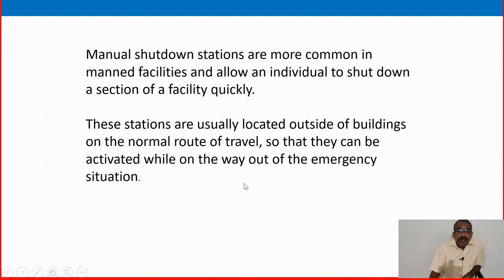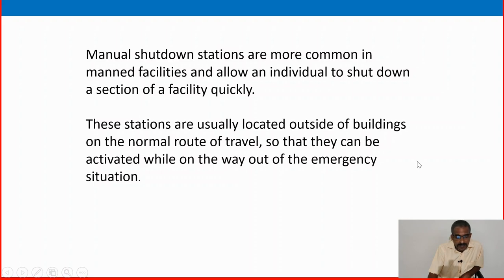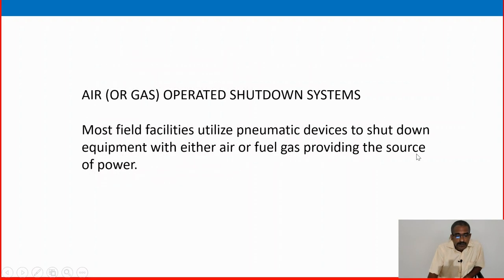These stations are usually located outside of the building, on the normal route of travel, so they can be activated while on the way during an emergency situation. Most field facilities utilize pneumatic devices to shut down equipment, with either compressed air or fuel gas providing the source of power.